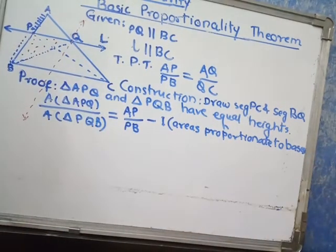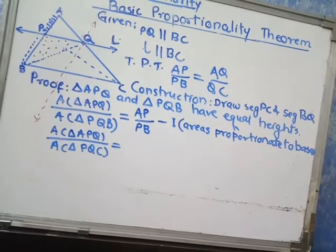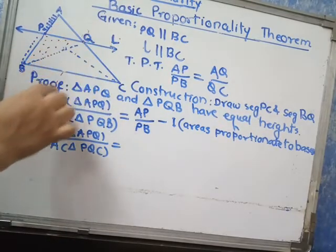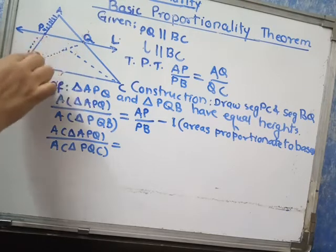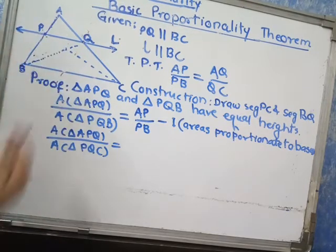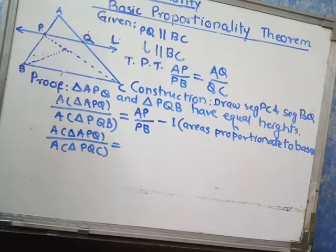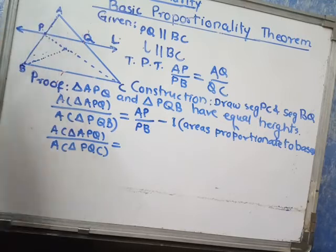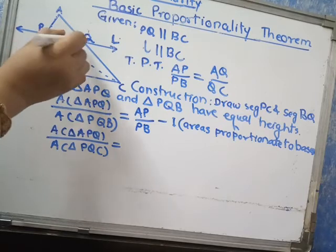On the other side, in this equation number 1, the same area of the triangle APQ will appear. So if we take the ratio of two triangles, triangle APQ with triangle PQC, this triangle.